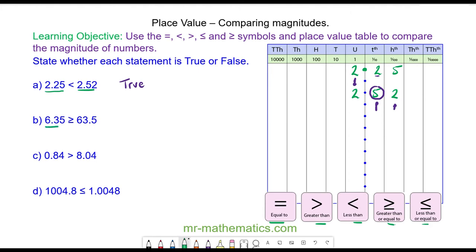The next one we have 6.35, six units, three tenths and five hundredths. And we have 63.5 which is six tens, three units and five tenths. And because 6.35 has zero tens, this number is bigger. This is false.